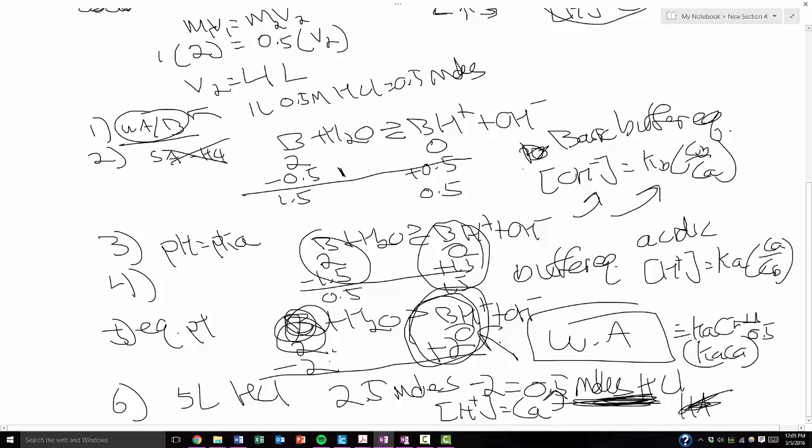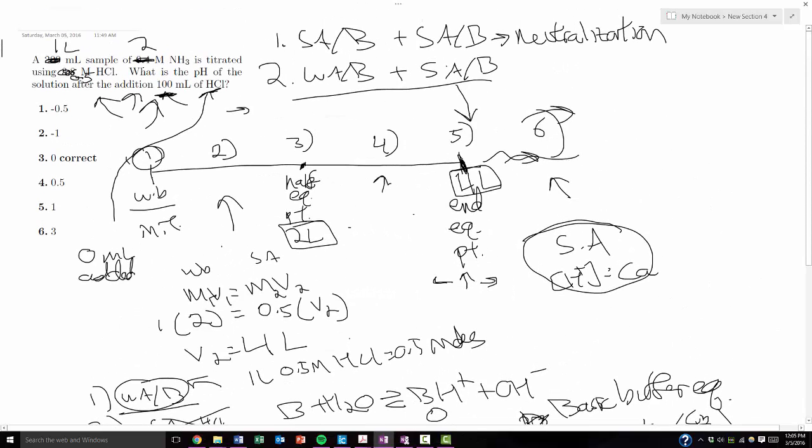And that's pretty much all the steps for solving a titration for a weak acid base and you're titrating with a strong acid base. Just figure out the equivalence point, figure out what stage you're in. Are you at one, two, three, four, five, or six? And that should help pretty much help you solve any titration problem that you might see on the exam.